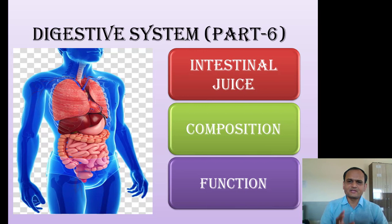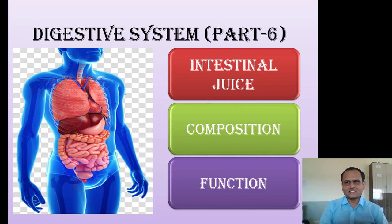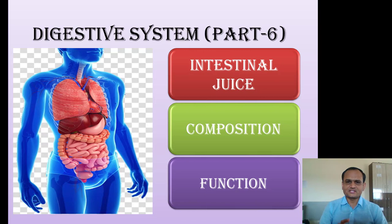The name intestinal juice indicates it is secreted by the small intestine. The mucosa of the small intestine has many modifications: circular folds, villi, and microvilli. In between the villi, at the base, special glands are present called intestinal glands. These intestinal glands continuously secrete the intestinal juice into the lumen of the small intestine.